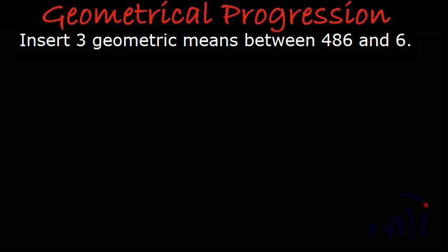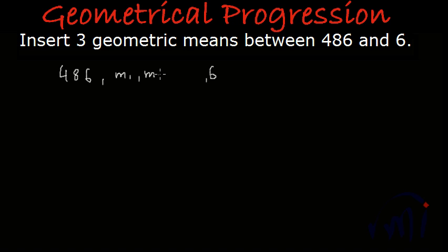We have one problem to solve related to geometric progression. In this problem we have to insert three geometric means between 486 and 6. This progression including those three means will have 486 as the first term and 6 as the last term. In between we will have three means — m1, m2, and m3 — and including these means this will be a pattern of five terms, which should be a geometric progression.